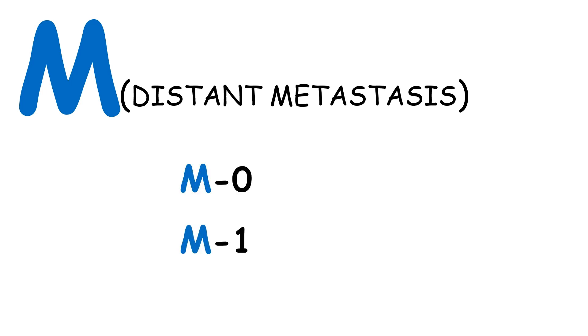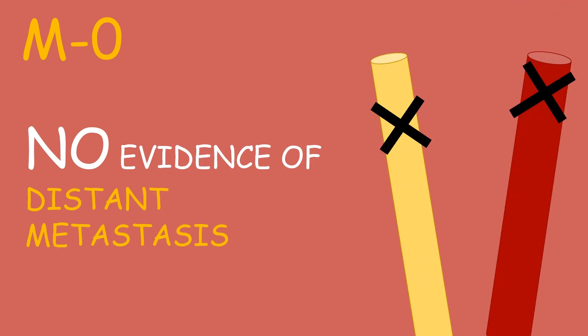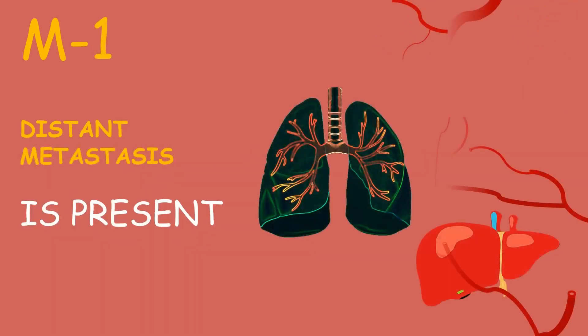M stands for distant metastasis, that is to regions far off from the cancer site. It is either M0 or M1. While in M0 there is no evidence of distant metastasis, in M1 distant metastasis to either the lung, liver, or bone is present.